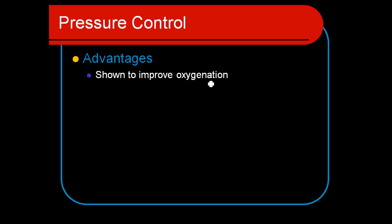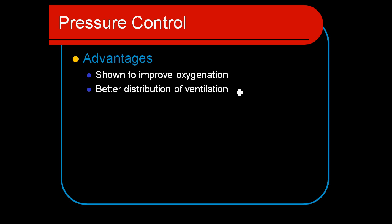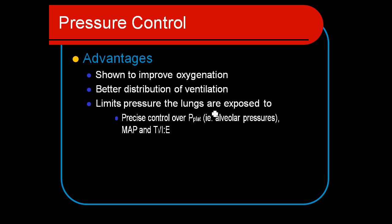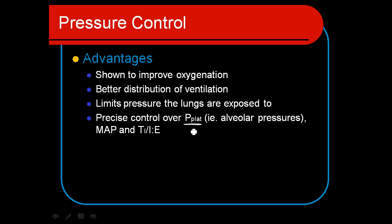A big component of ARDS is oxygenation — it's difficult to oxygenate these patients, but this can be achieved more effectively with pressure control ventilation. We can also get better distribution of ventilation because this mode is set up with an inspiratory pause, allowing equal distribution even in lung regions with high resistance. The pressure limit protects healthy areas of the lungs, and we get precise control over the mean airway pressure, or PAW, which directly relates to oxygenation.